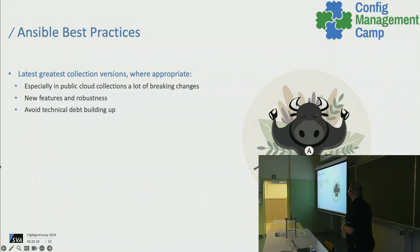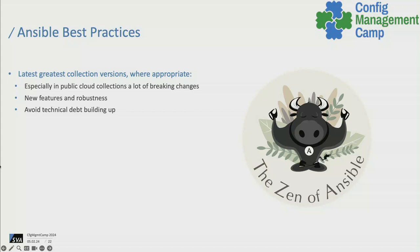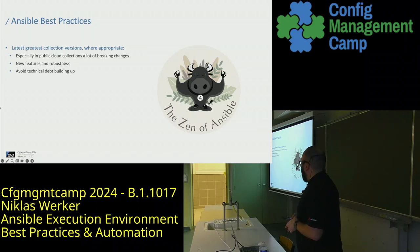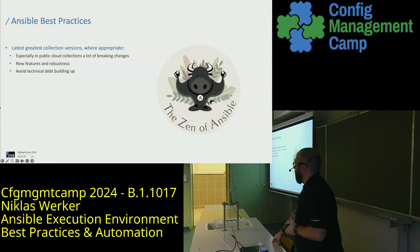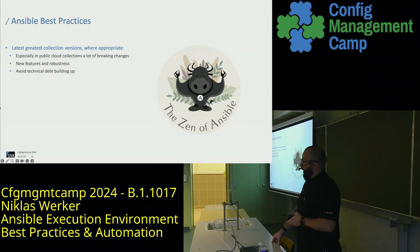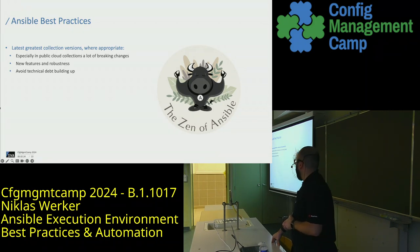Ansible best practices — I kept this very short. I work a lot in public clouds and have the case that latest and greatest, where appropriate, should be used. There's a very structured release management and stringent testing to update the collections you use on a regular schedule so you don't miss out on features or bug fixes. There were a lot of talks about code quality — if you don't keep your code up to date, it probably won't work in some time. Avoid technical debt building up and use the free time you gained through automating to maintain your automation.